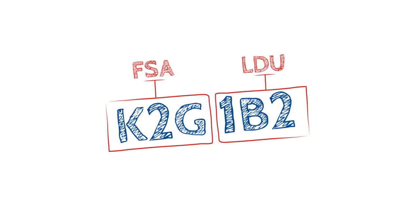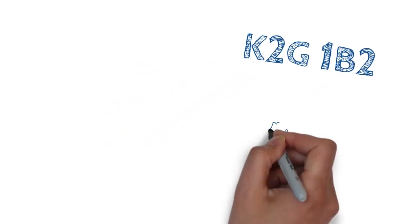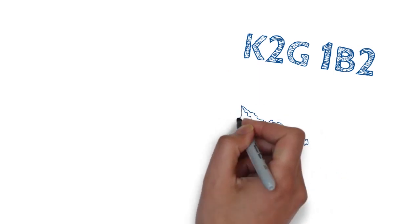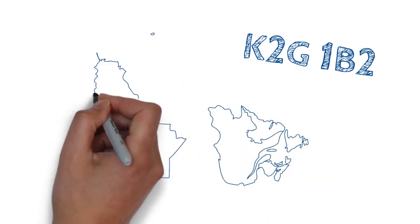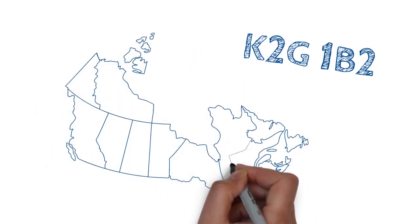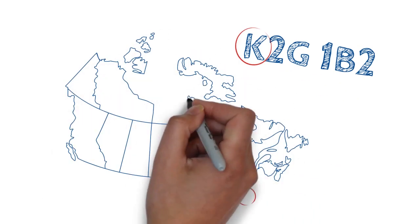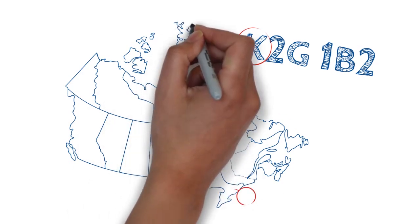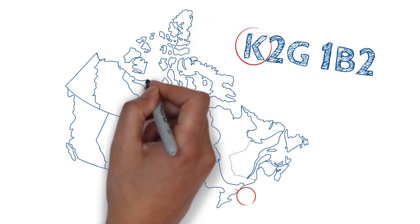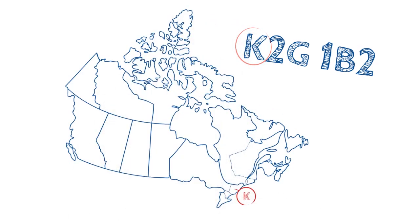The first character of a postal code is the first level of granularity in identifying an area of Canada. It identifies one of the 18 major geographic areas, provinces or districts. Here, the first character of the FSA segment — K — identifies Eastern Ontario.